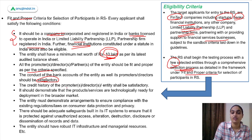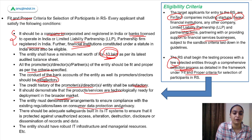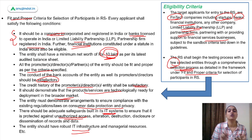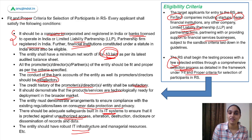Additional requirements include: the conduct of the bank account of the entity as well as its promoters and directors should be satisfactory as per RBI's needs; the credit history of promoters and directors should also be satisfactory; the entity must demonstrate that its products and services are technologically ready to be deployed in a broader market; and entities need to ensure consumer data protection, privacy, and proper IT systems to prevent unauthorized data access.